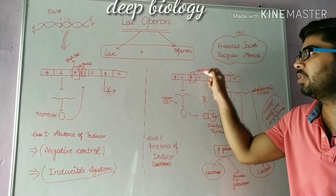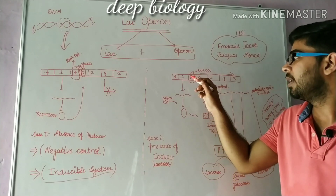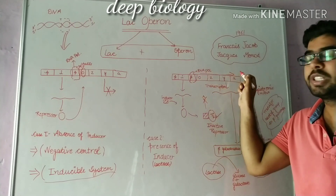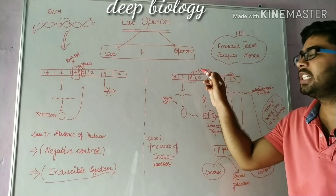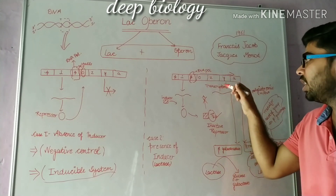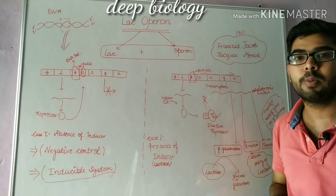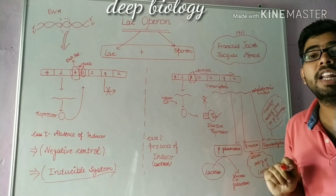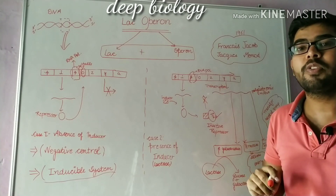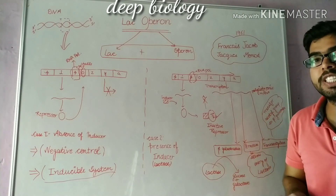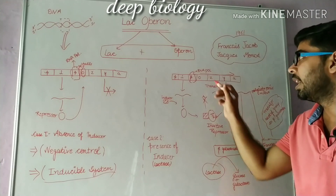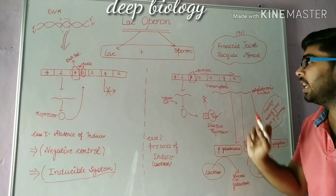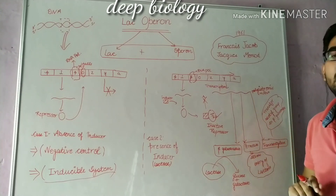Because of the absence of repressor, the promoter allows RNA polymerase to bind. RNA polymerase proceeds to the structural genes and polycistronic mRNA is formed by transcription. This polycistronic mRNA then undergoes translation and produces three types of enzymes: Z encodes beta-galactosidase, Y encodes permease, and A encodes transacetylase.